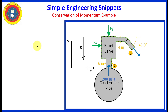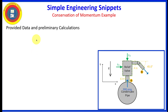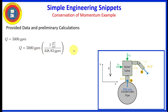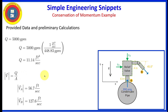Let's get into some preliminary calculations. The flow rate is provided — 5,000 gallons per minute. Let's go ahead and convert that into cubic feet per second. Once we've done that, we can determine the velocity at alpha and bravo, since we know the diameters. If we do that, we get the values shown here.